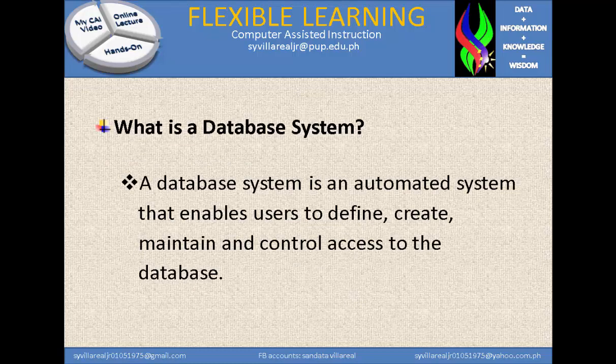A database system is an automated system that enables users to define, create, maintain, and control access to the database. The difference between a database and a database system is that a database can be automated and can be manual, while a database system is only for the computer.